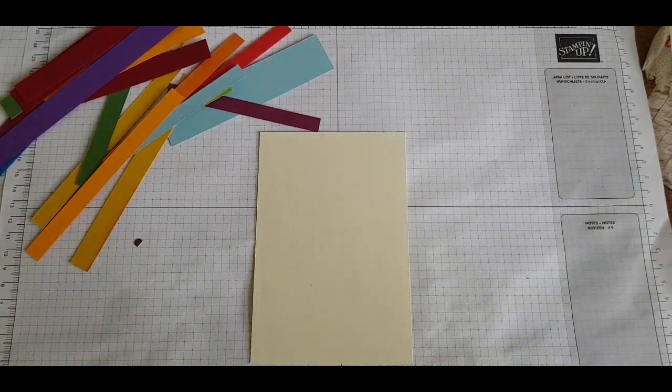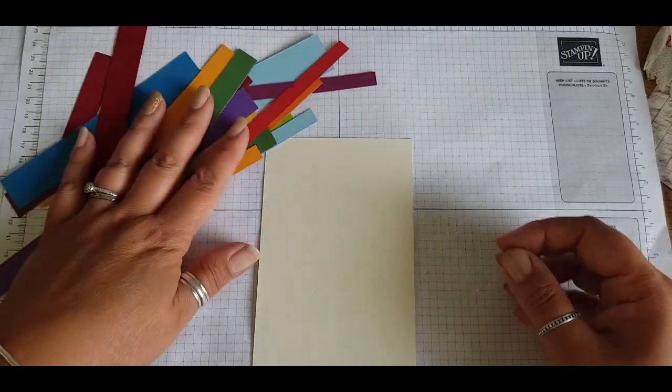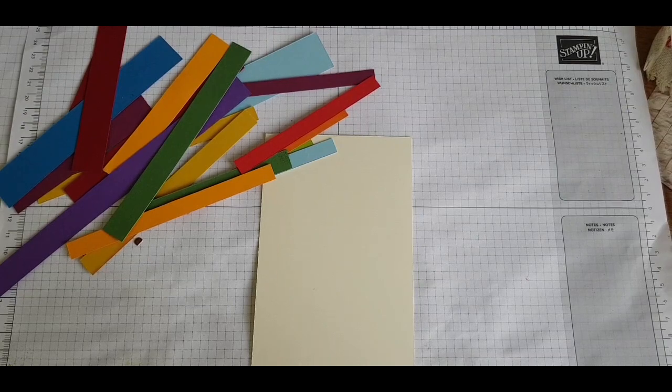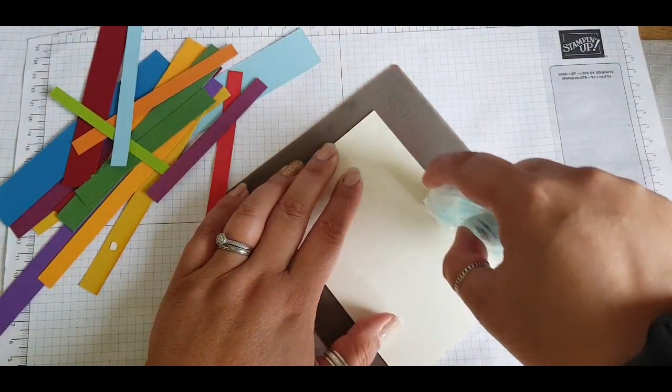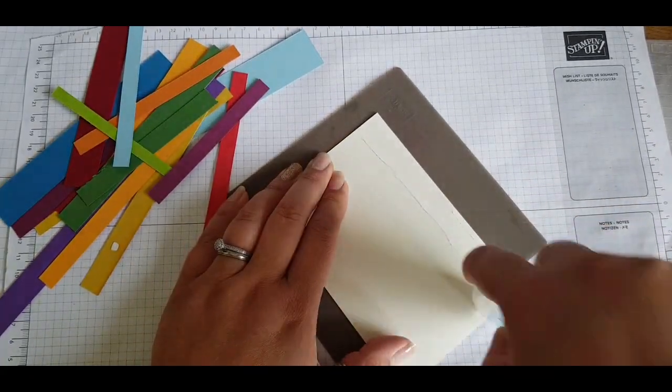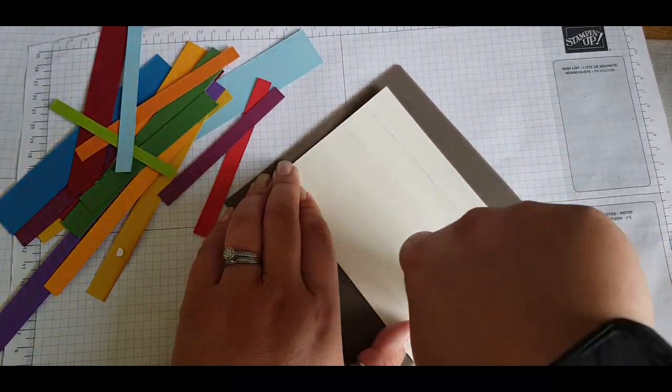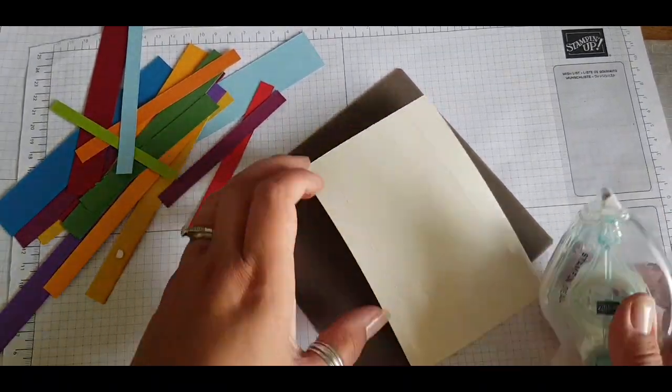I start off with a mat layer of cardstock and I've got some strips of colored card here, all different lengths and different sizes. I'm going to use my tape runner just to lay down some glue so I don't get in too much of a sticky mess, laying down strips so I can adhere my colored strips to it.